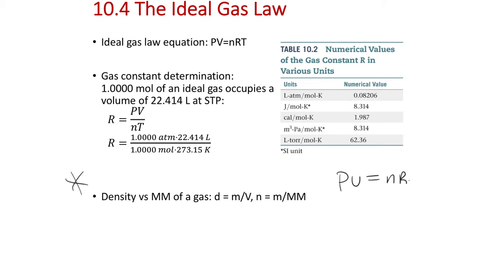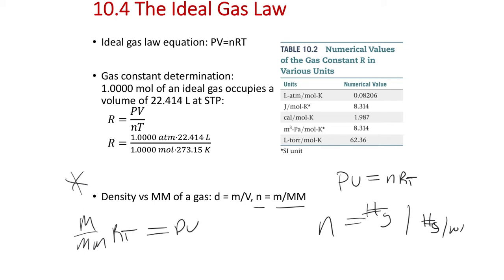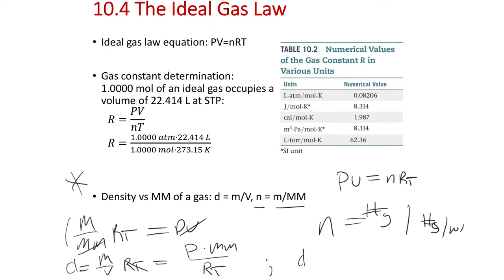We recall that PV equals nRT. If you write moles as mass over molar mass — so just number of grams divided by grams per mole — that equals the number of moles. So n = m/M. Rewriting: (m/M)RT = PV. Dividing both sides by volume and rearranging, (m/V)·RT = P·M, so density — mass over volume — equals P·M divided by RT. The density of a gas sample is only related to its pressure, molar mass, and RT.